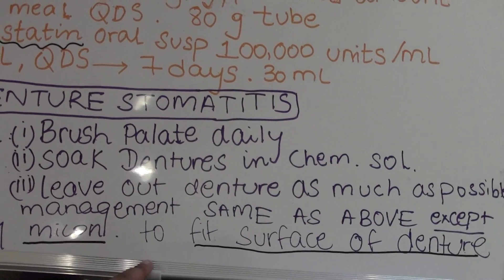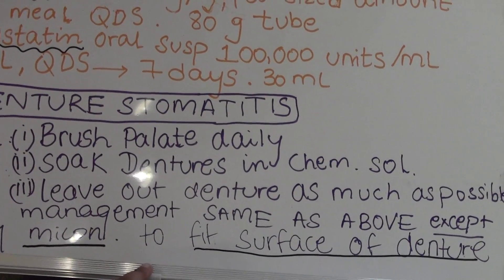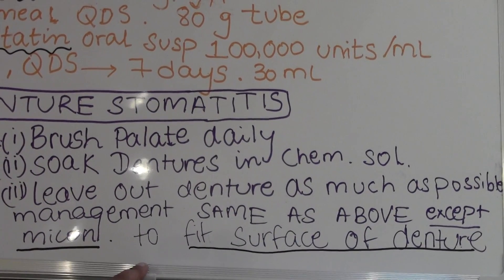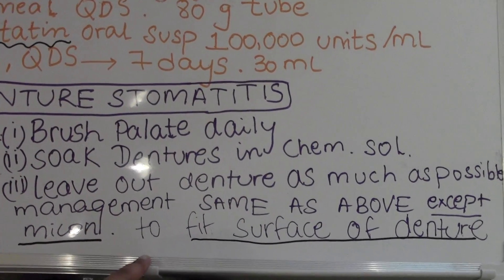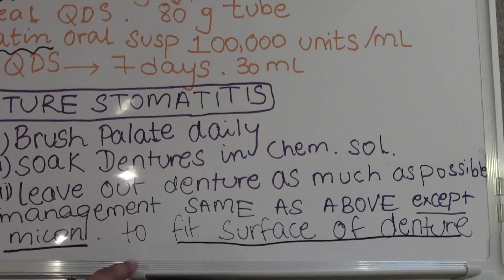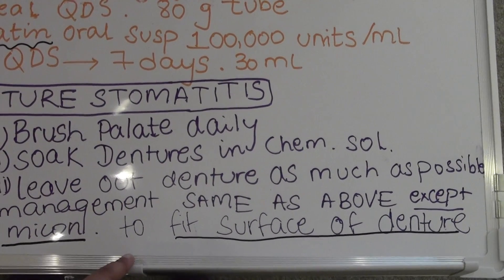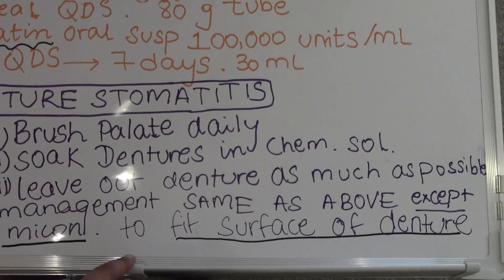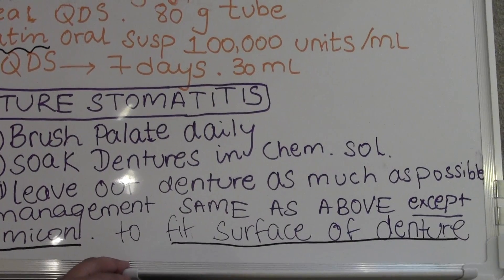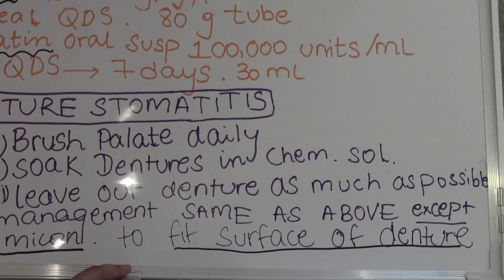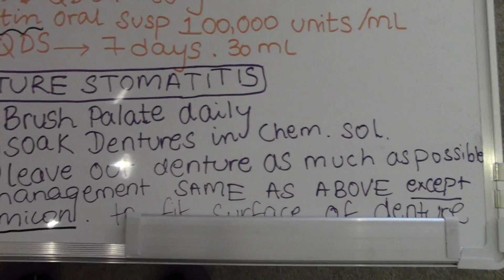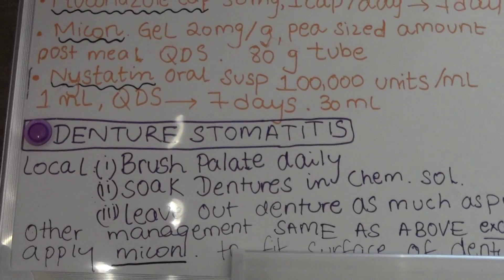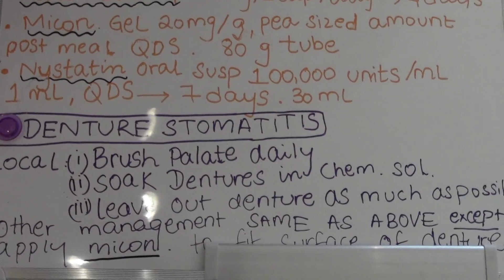Soak the denture in a chemical solution — it depends on what kind of denture they're wearing. If they're wearing a metal or cobalt-chromium denture, this can be chlorhexidine mouthwash. However, if they're wearing acrylic dentures, it has to be sodium hypochlorite. They should also leave the denture out as much as possible, which will ensure it heals up faster.